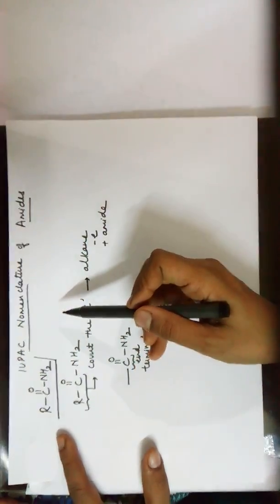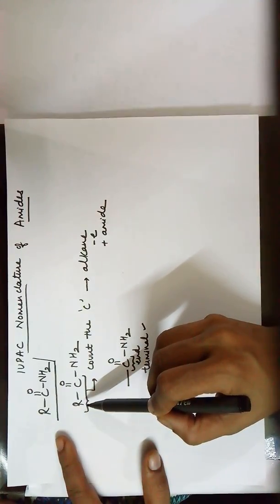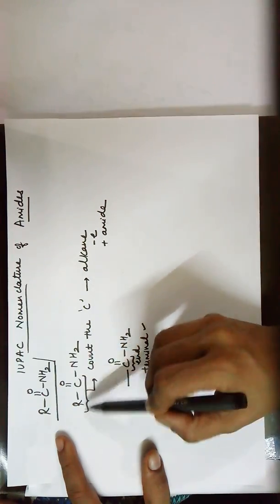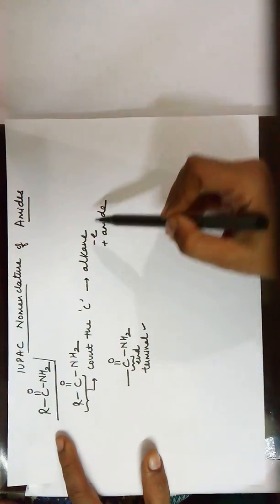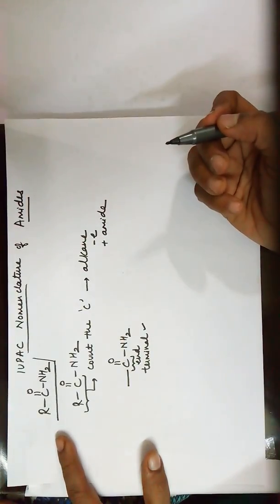For the IUPAC nomenclature, you need to count the carbons in the R group (the alkyl group, the longest chain) and the carbon of the amide group. Name it as an alkane, remove the E and add amide. The position may not be mentioned since it's a terminal group.